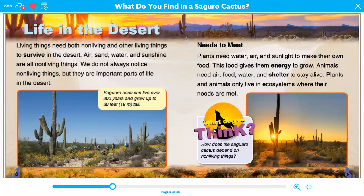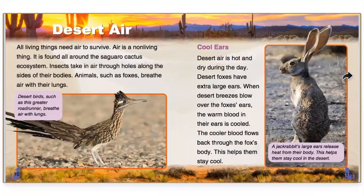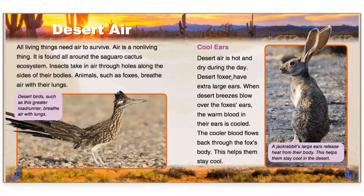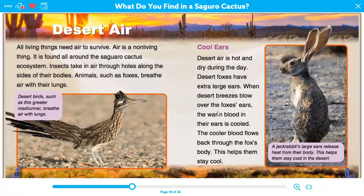I love this book because it has great captions and great illustrations. Desert air: all living things need air to survive. Air is a nonliving thing found all around the saguaro cactus ecosystem. Insects take in air through holes along the sides of their bodies. Animals such as foxes breathe air with their lungs. Desert foxes have extra large ears. When desert breezes blow over the fox's ears, the warm blood in their ears is cooled, and the cooler blood flows back through the fox's body — this helps them stay cool. This whole section is a great example of main idea and details: the main idea is how animals use their ears in the desert, and these sentences give specific details on how they use their ears.